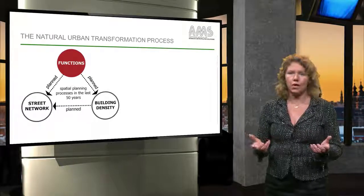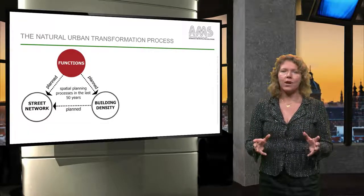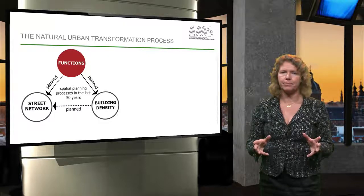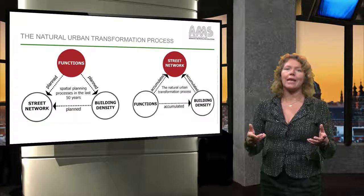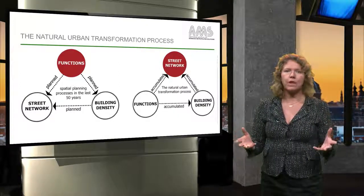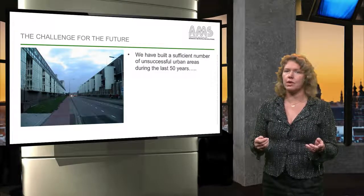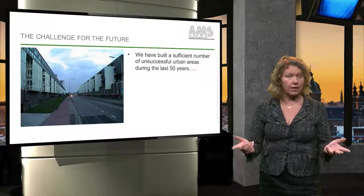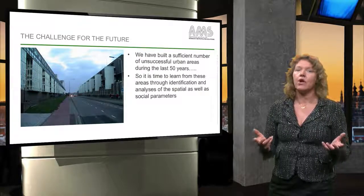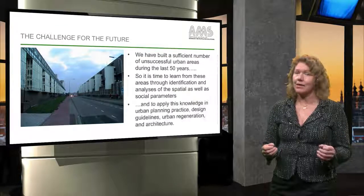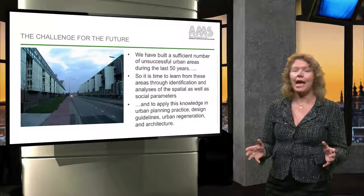At the moment, we are working on a theory on how cities transform naturally. The role of functions have played a very important role on how we have planned our cities. But in order to plan more successful cities, the street network should play an important role. In the end, the functions and building density are accumulated by the street network. We have built a sufficient number of badly functioning urban areas during the last 50 years. So now it's time to learn from these areas through identification and analysis of the spatial as well as the social parameters, and to apply this knowledge into urban planning practice, design guidelines, urban regeneration and architecture.